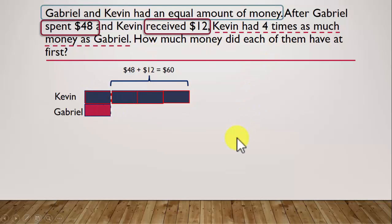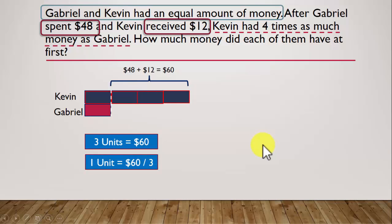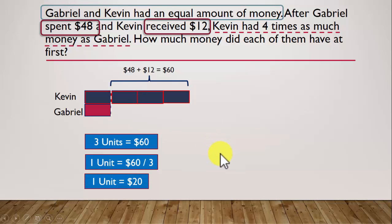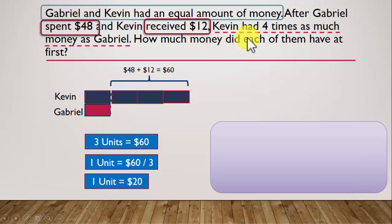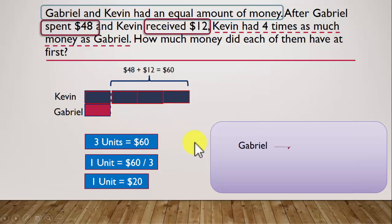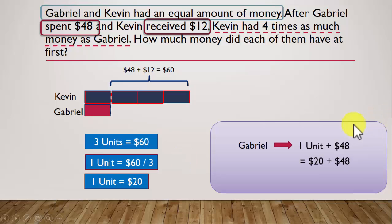In this scenario, we know that these three units is equal to $60. So one unit is equal to 60 divided by 3, which is $20. Now let's look at how much money did each of them have at first. Let's look at Gabriel. Gabriel had whatever one unit he has now, plus he had $48. So Gabriel had one unit plus $48, which he doesn't have now but at first he had. That's $20 plus $48, which is equal to $68.